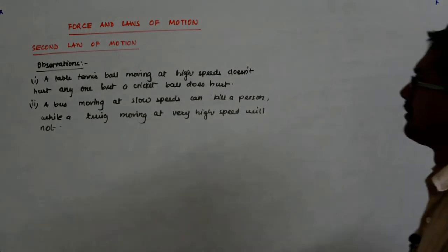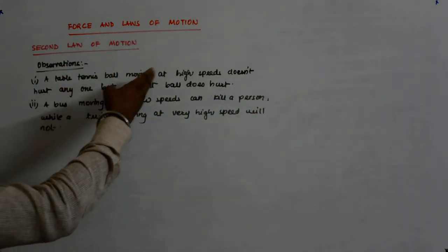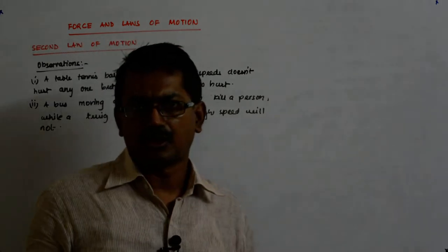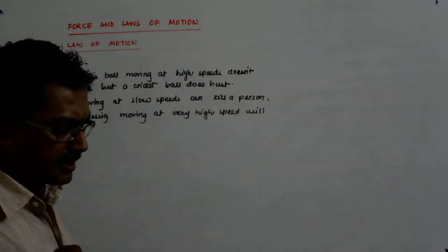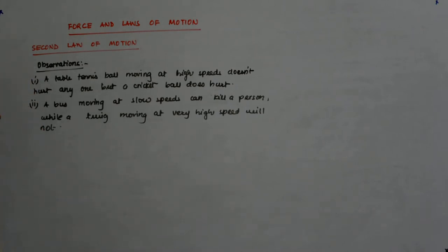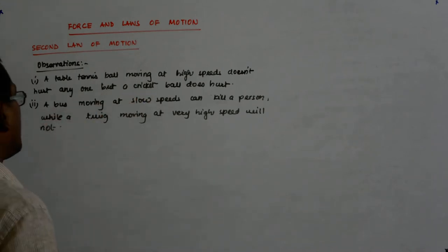We have our observations that a table tennis ball, a small light ball moving at high speed, even if it hits you, does not make much impact. But a cricket ball or baseball moving at that speed may kill. Similarly, a bus moving at slow speed can kill a person while a twig moving at very high speed will not be able to do anything.